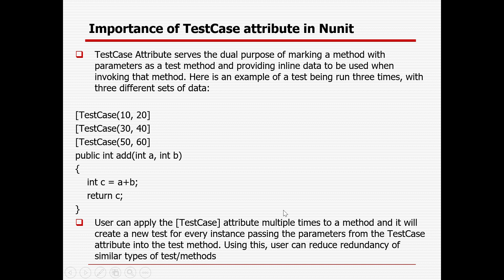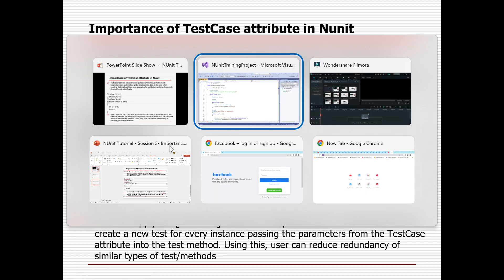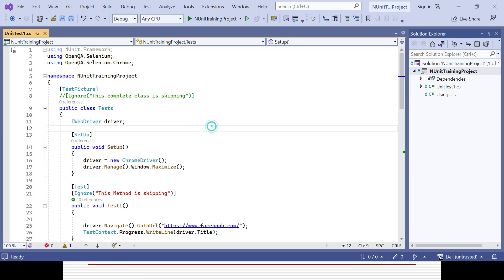A user can apply the TestCase attribute multiple times to a method and it will create a new test for every instance, passing the parameters from the TestCase attribute into the test method. This reduces redundancy — instead of repeating code, you invoke the same method with different varieties of data from the TestCase attribute.